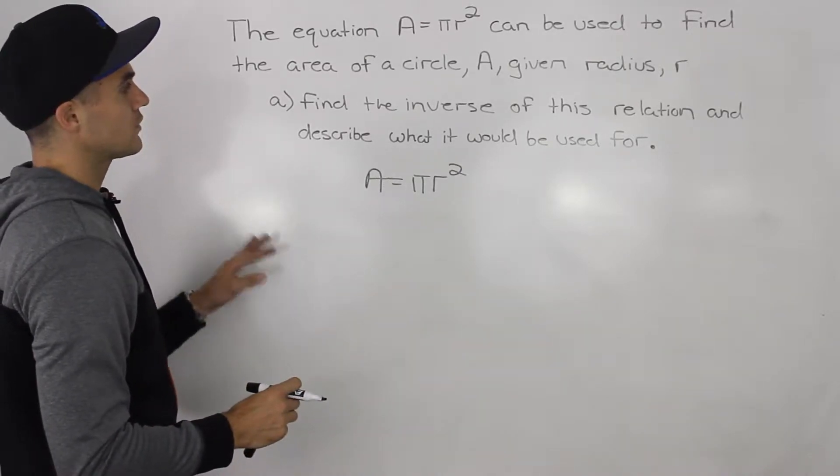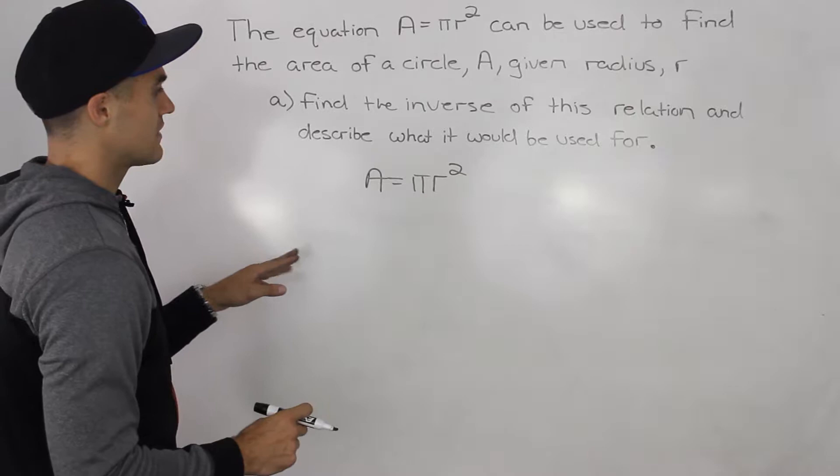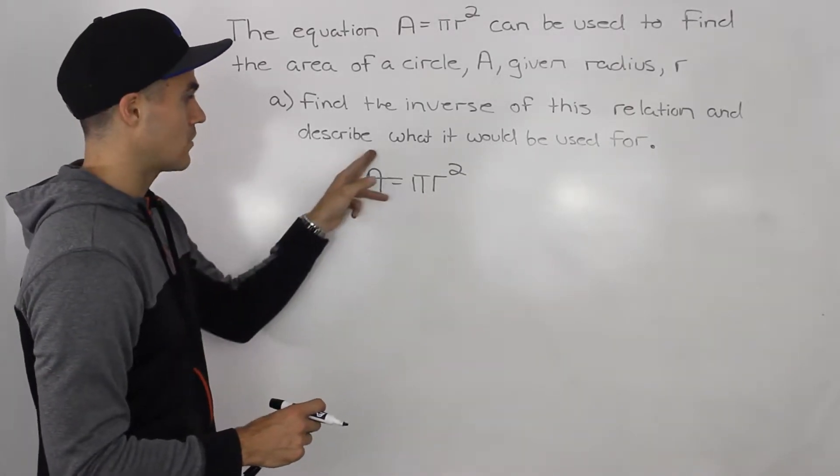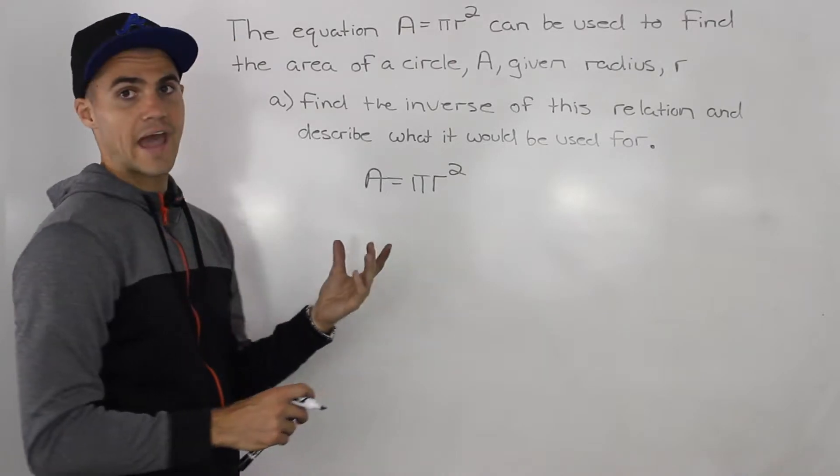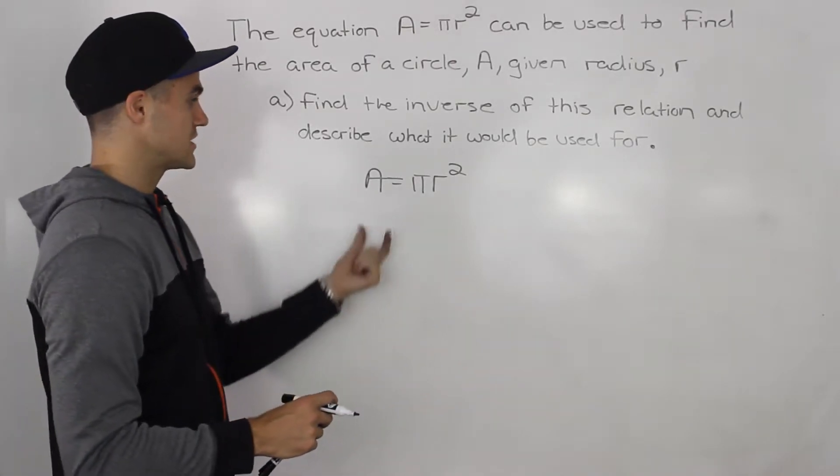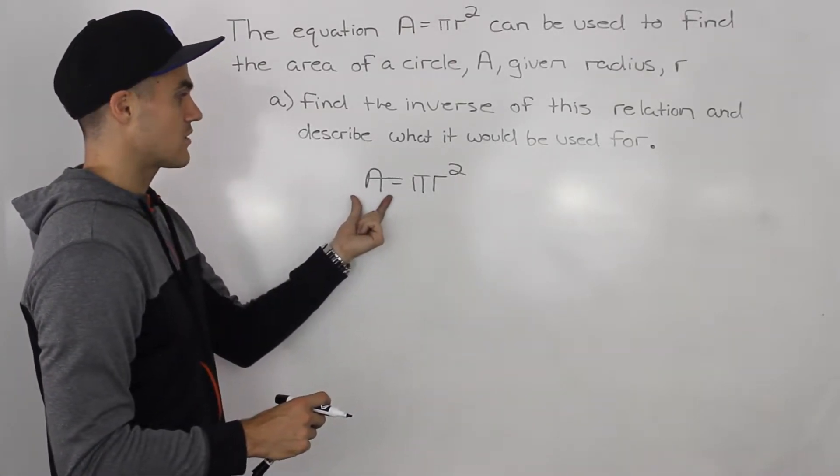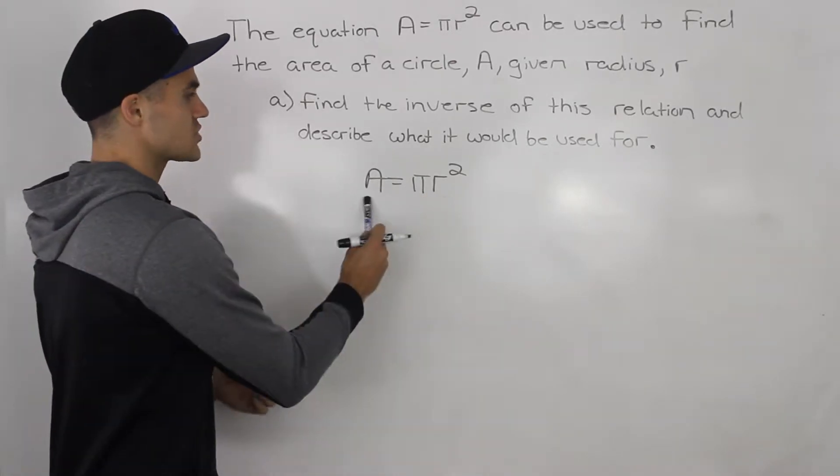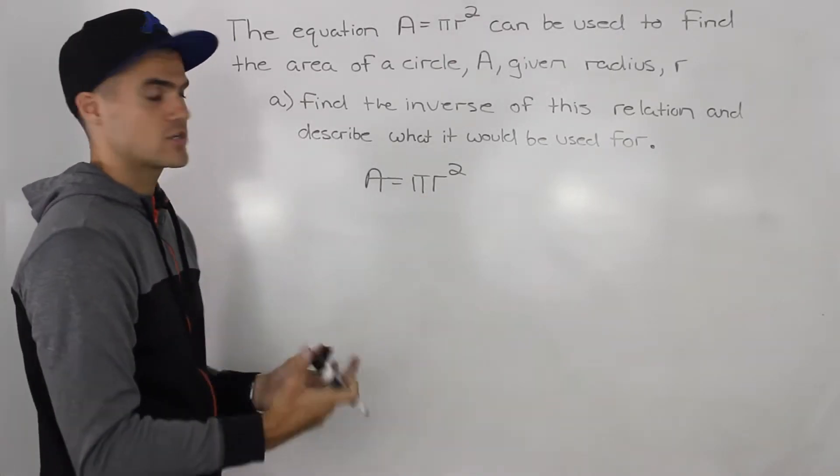Well, whenever you're given equations that relate actual things like a word problem, notice how we're not just dealing with an abstract y or x, we're dealing with A, which represents area, and then r, which represents radius. We can't just switch these because then the equation will be wrong.